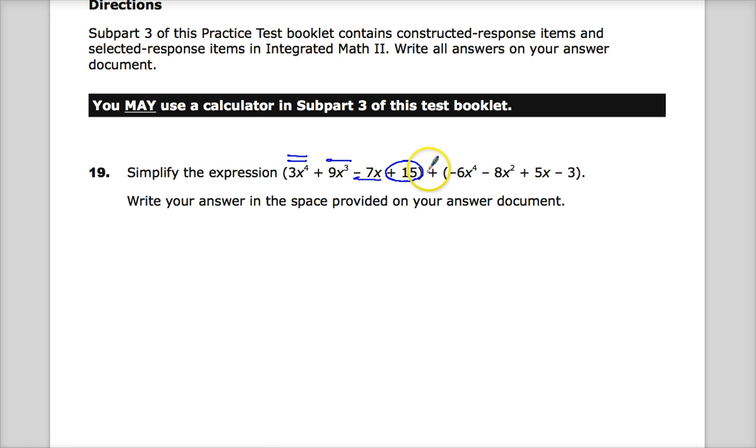it's either 3x to the fourth minus negative six, or change this, or distribute a negative one to all the terms. Whatever, just be careful. Anyway, back to making my marks. So I'll start keeping everything in standard form. I'm going to keep my x to the fourth first. So 3 minus 6 is negative 3.